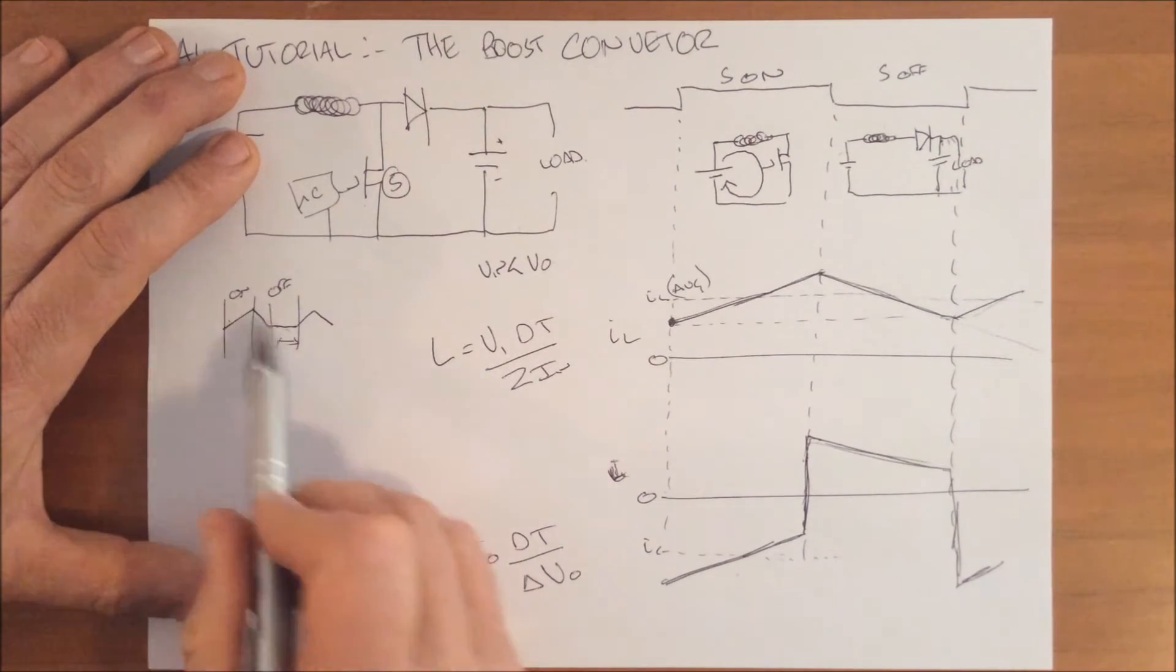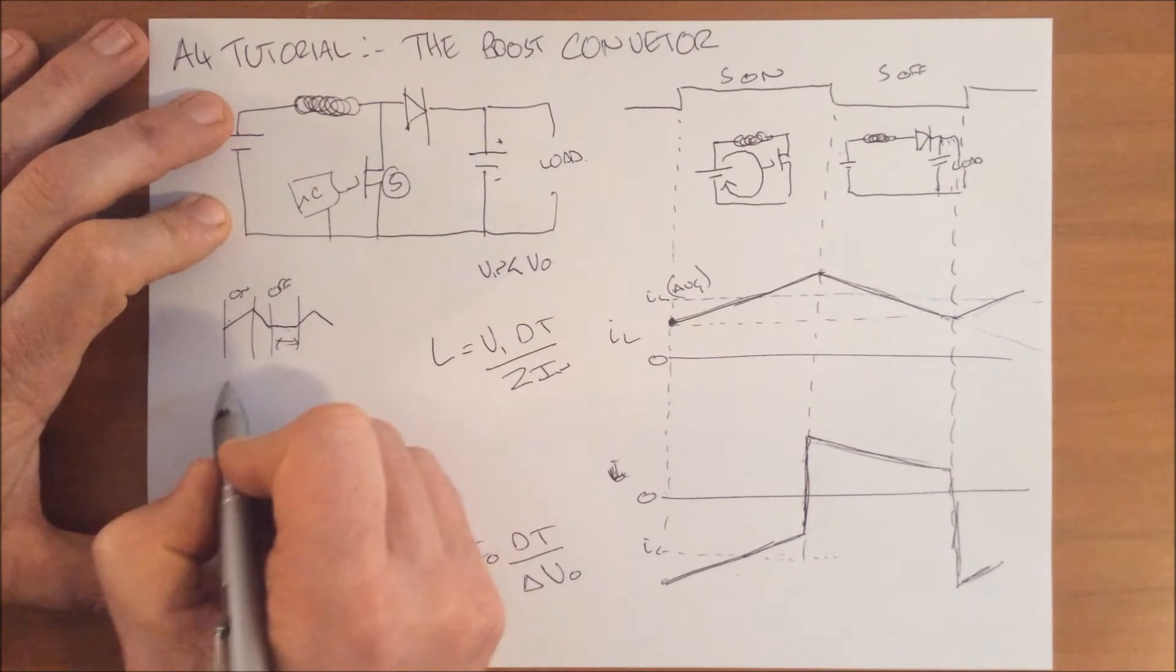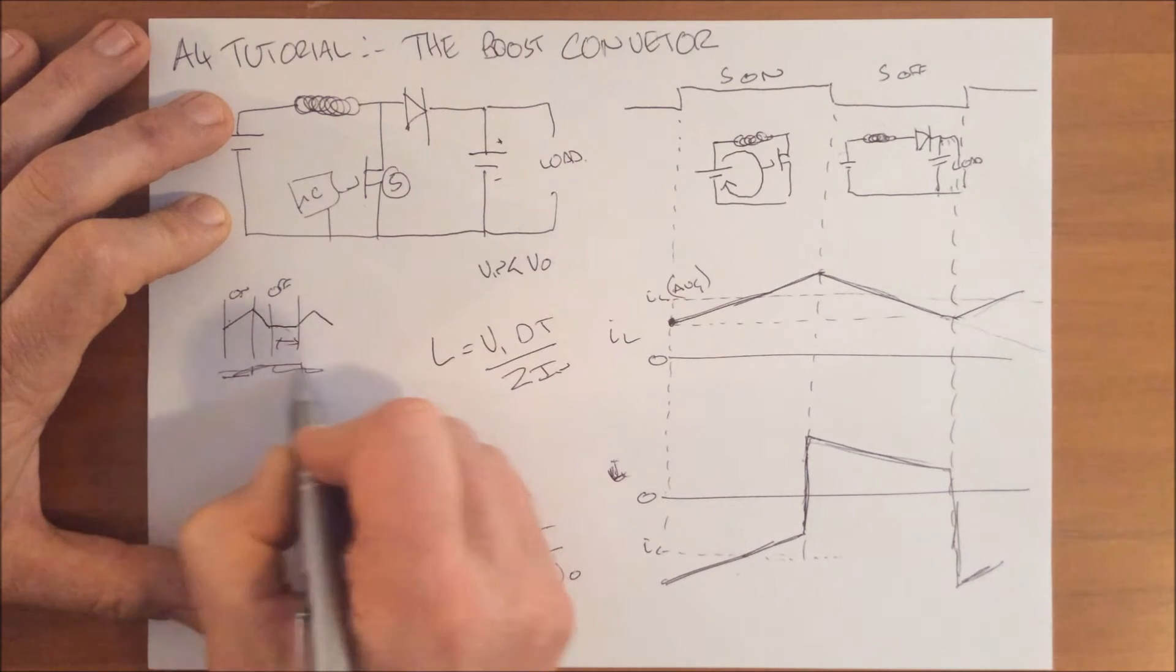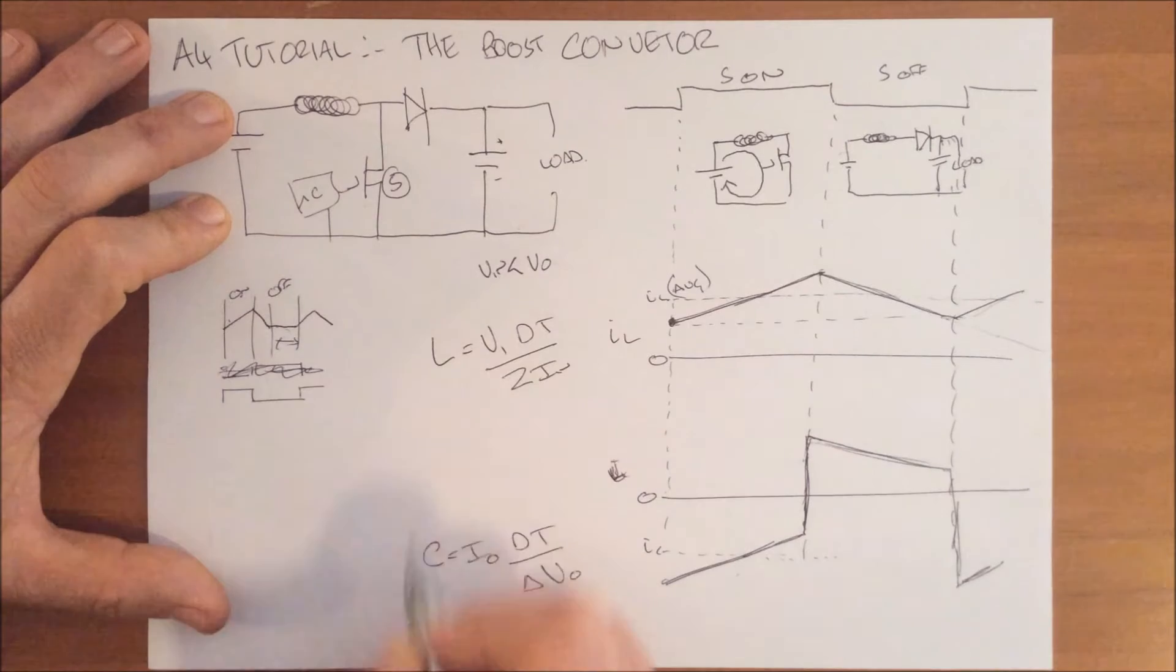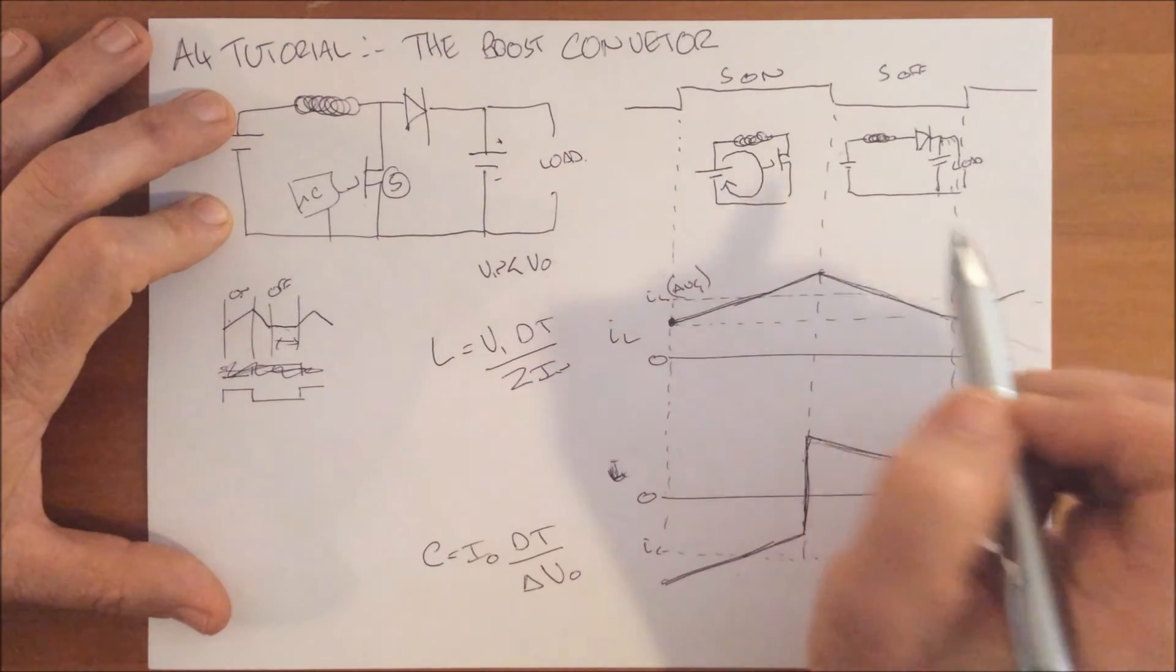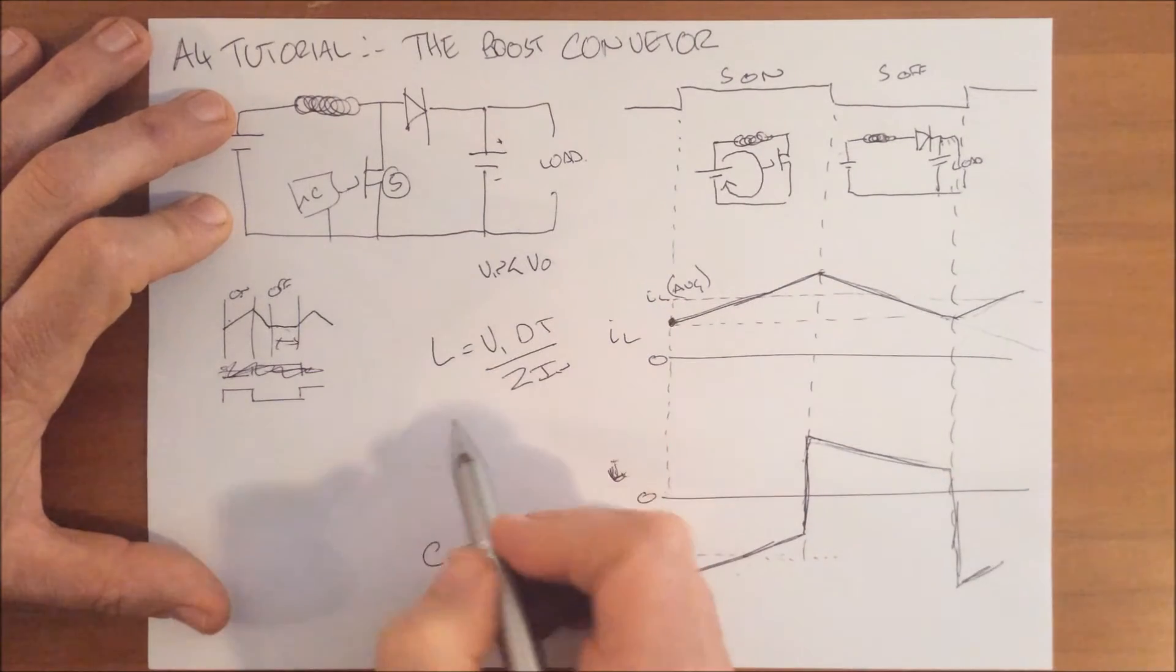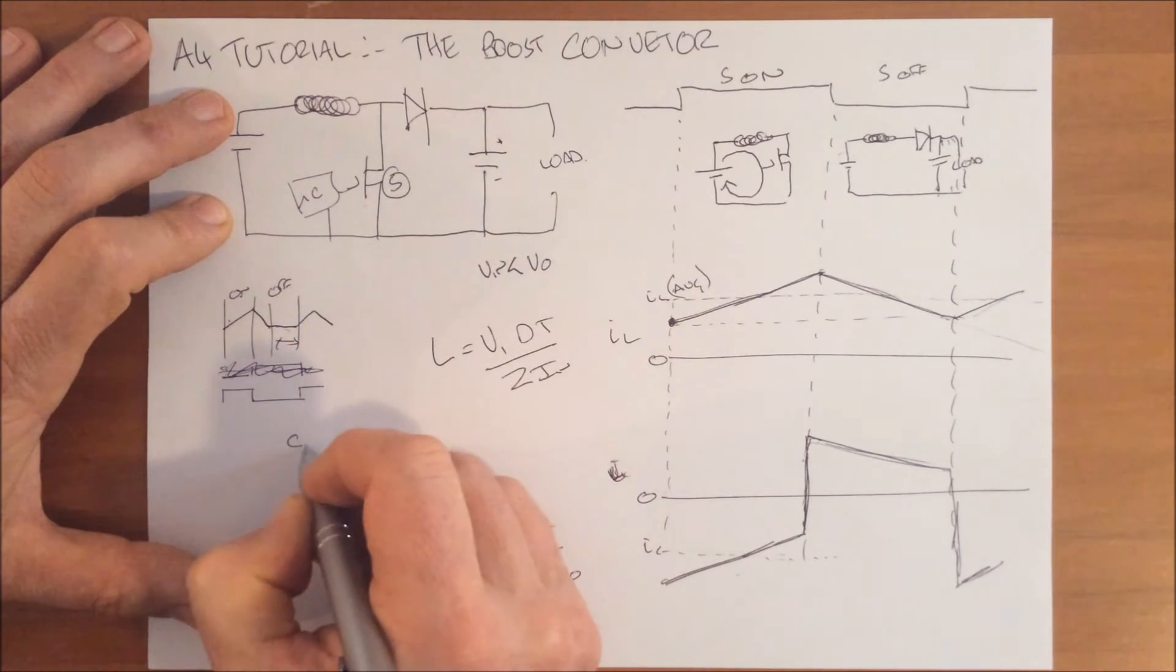There are a couple of ways of operating the boost converter in this discontinuous mode. The first one would be to have a very low duty cycle. This duty cycle is much less than the one I've got drawn up here. The other one would be to choose an inductor that is too small, less than this value.